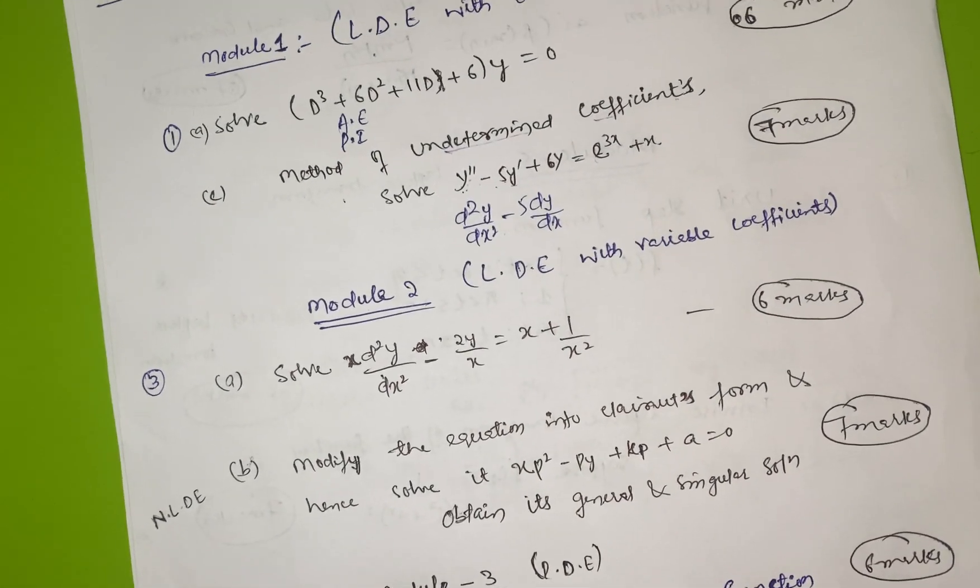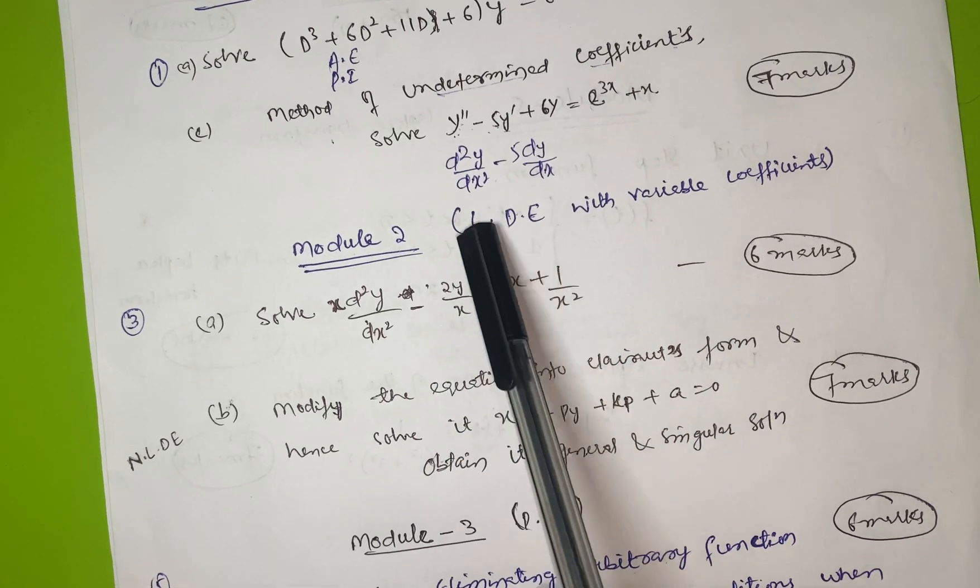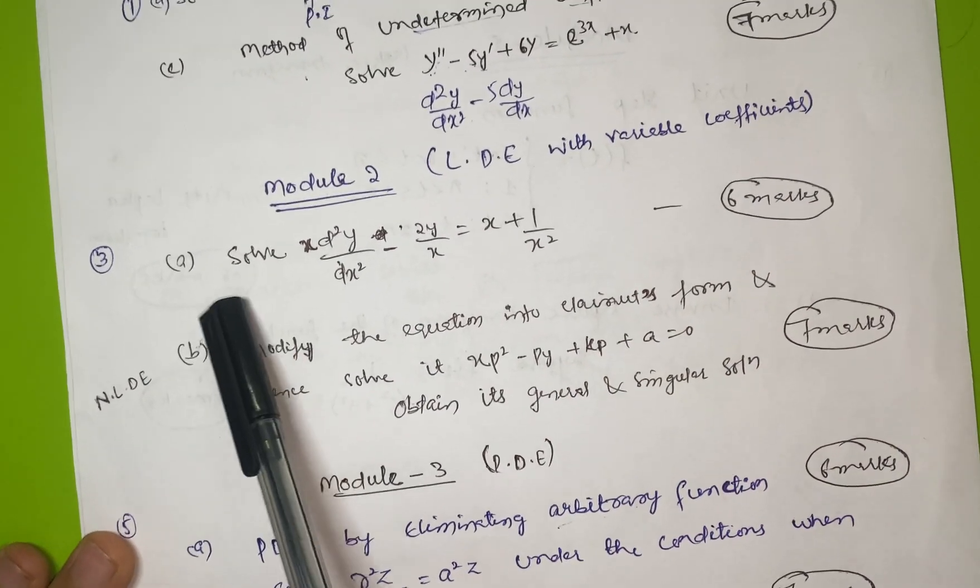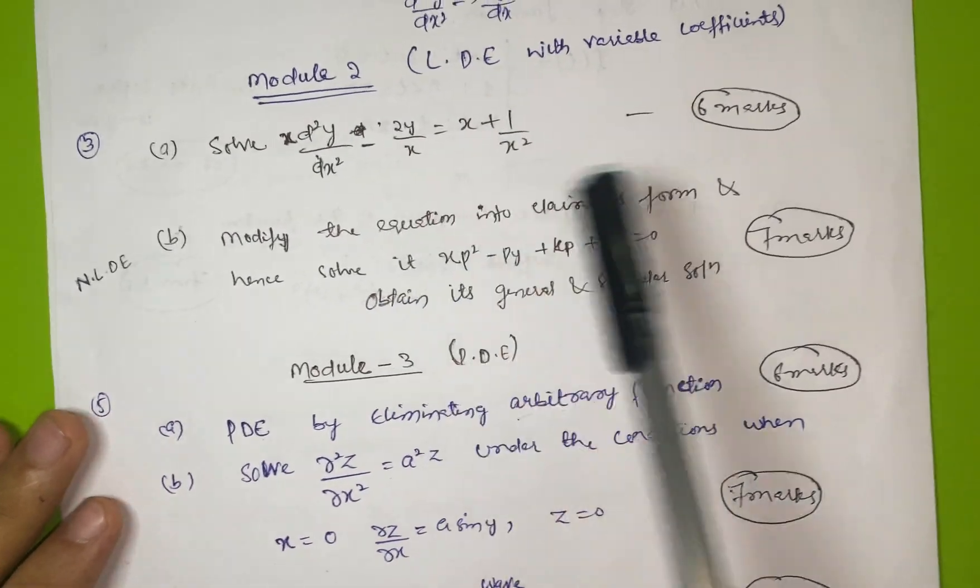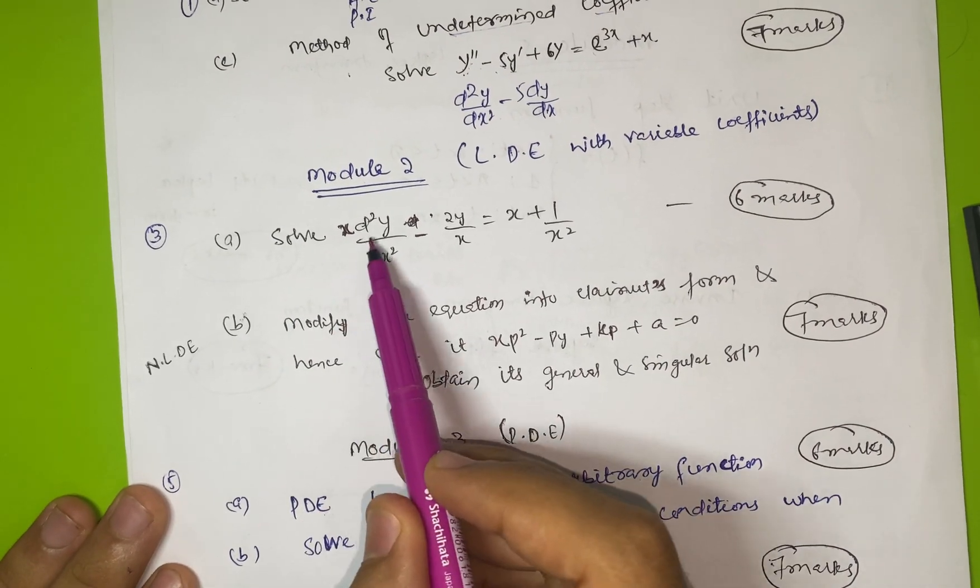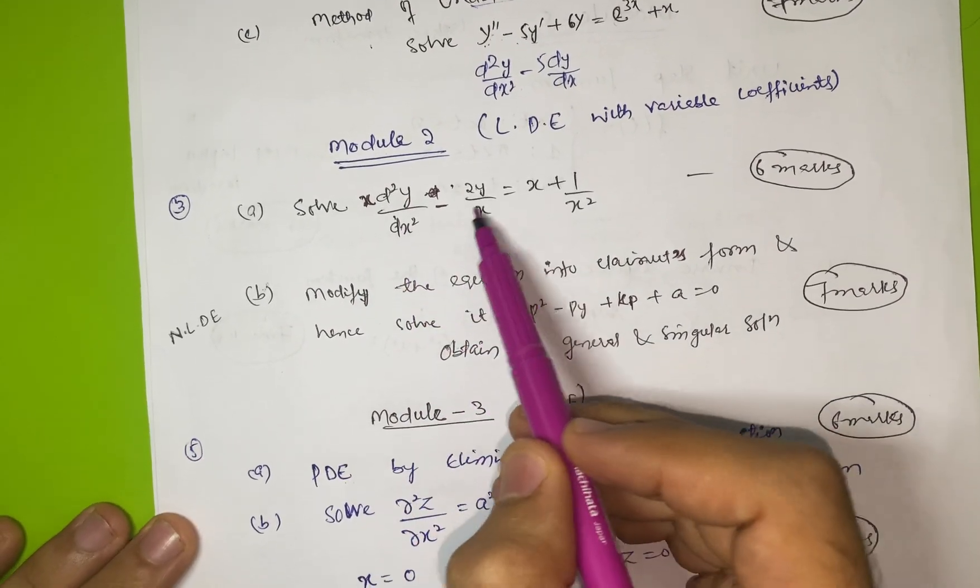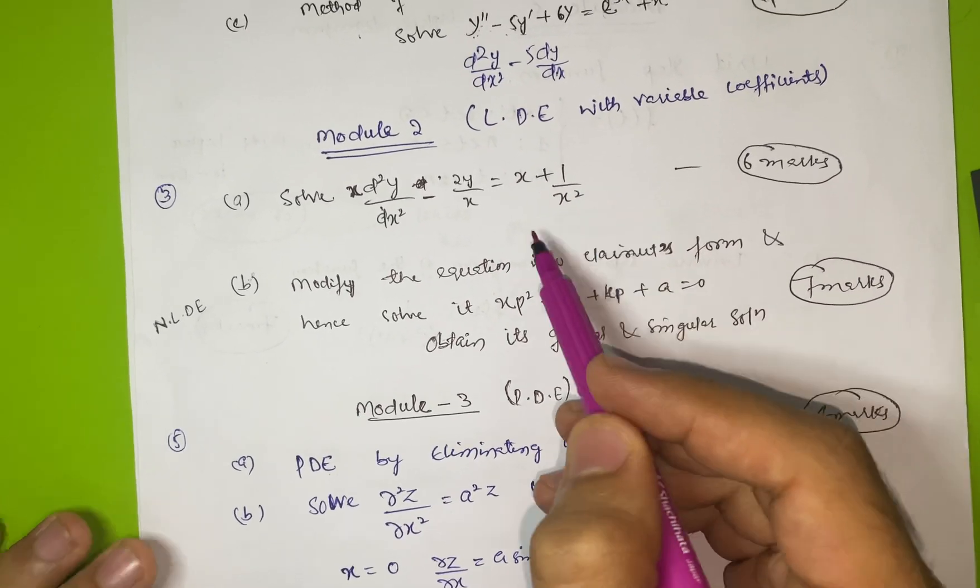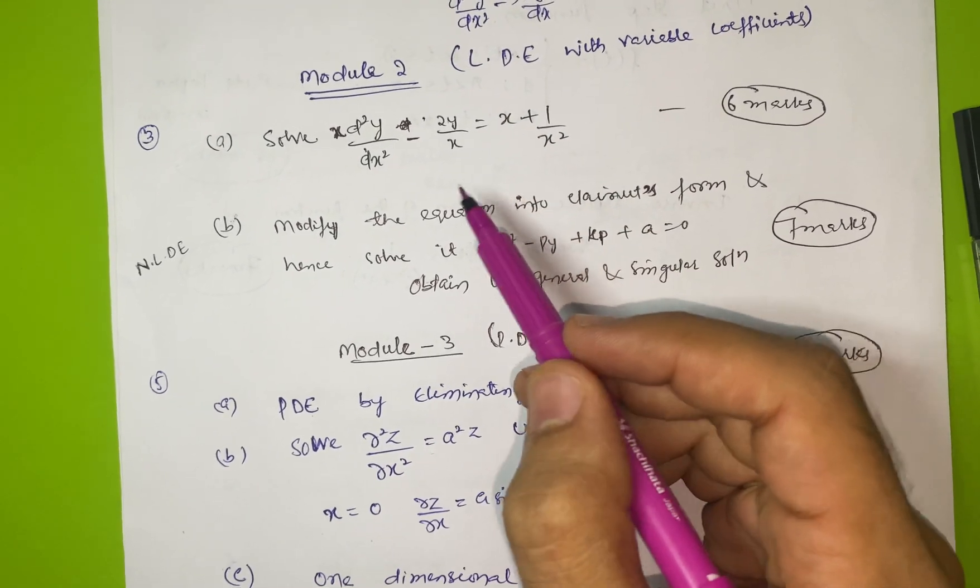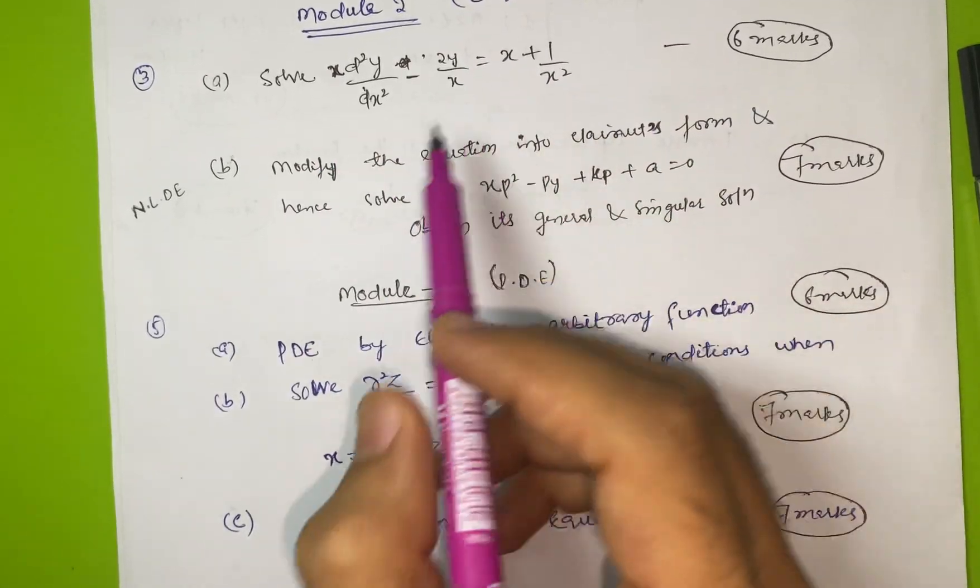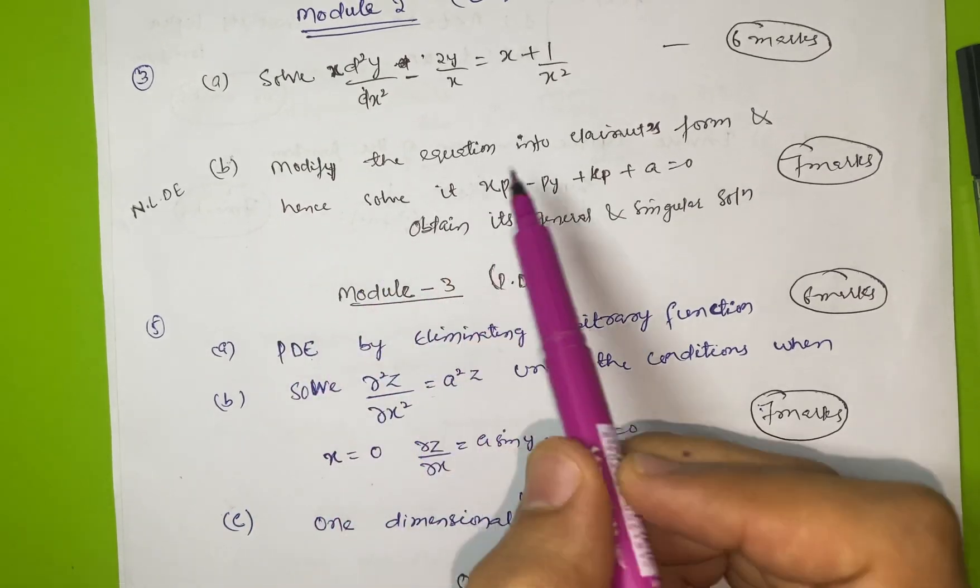Then you have to attempt Module 2, which is also a simple topic: Linear Differential Equation with Variable Coefficients. You have two topics to cover. The first one is solve x(d²y/dx²) - 2(y/x) = (x+1)/x². You have to put t = log(x) in these type of questions, so focus on this topic.